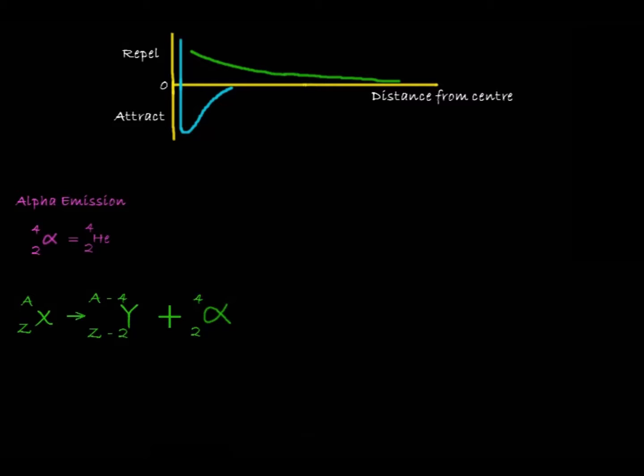We represent alpha emission with this equation: X element to Y element with the atomic number minus 4 and the proton number minus 2 plus the alpha particle.